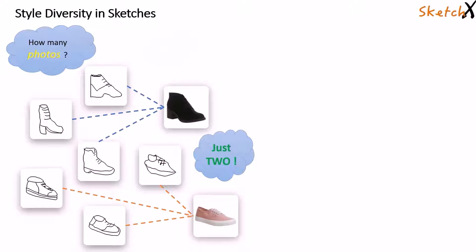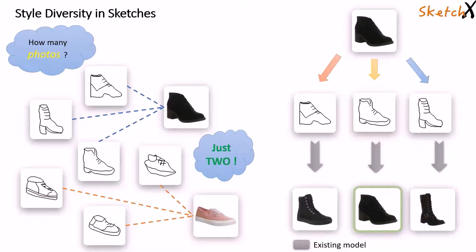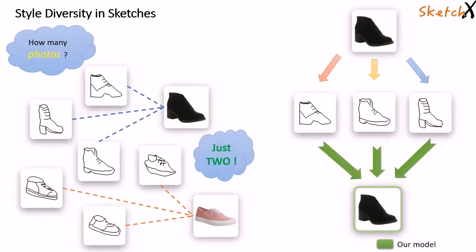This is what we are referring to as style diversity in sketches. Ignoring this trait, existing retrieval models sometimes wrongly fetch different photos for different sketches of the same photo. We therefore intend to model this style diversity such that every sketch style query of one object retrieves the same object.